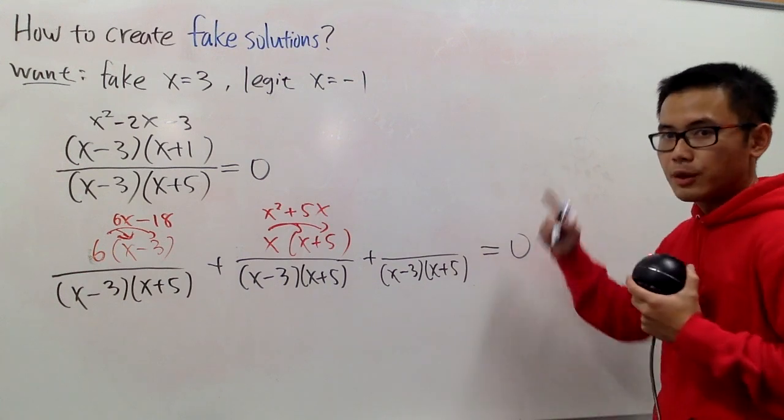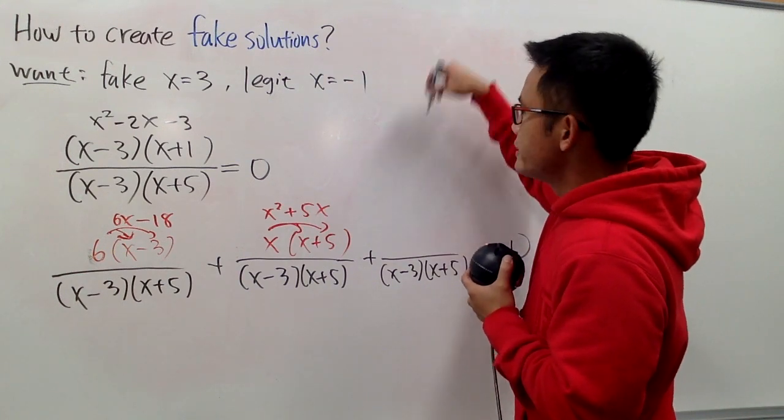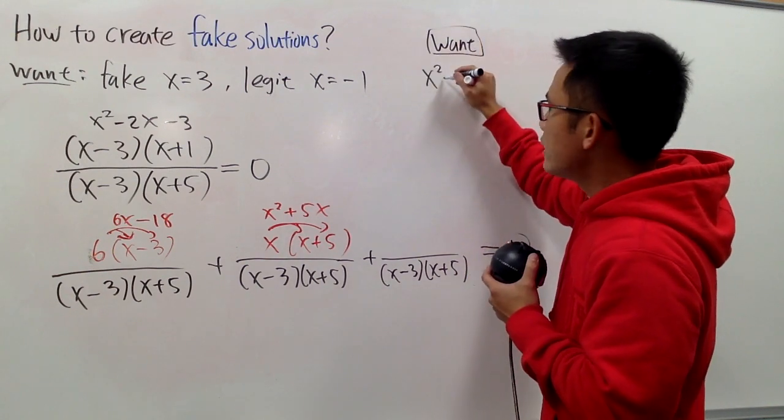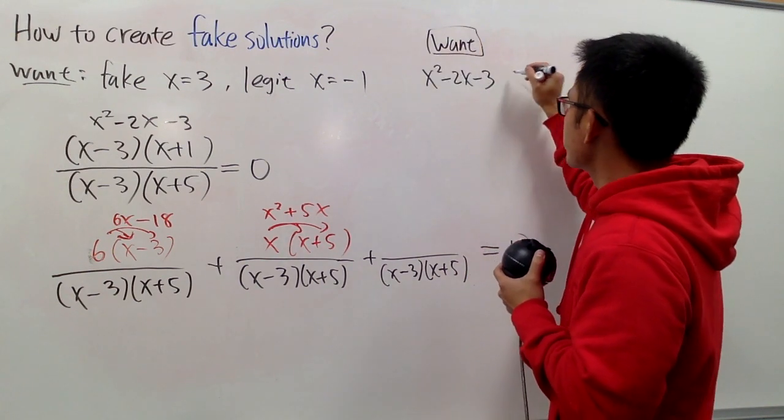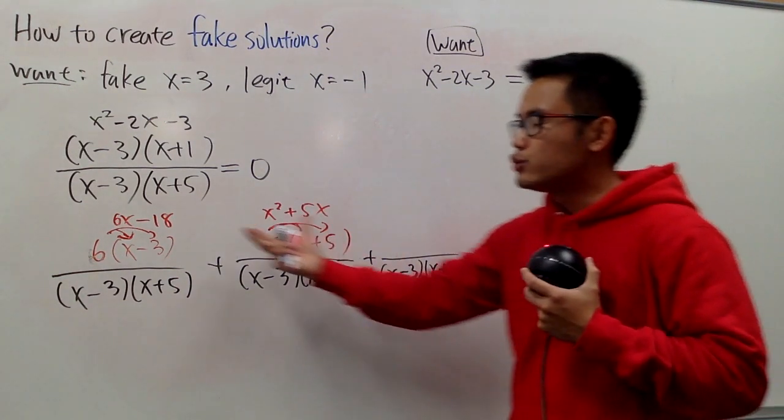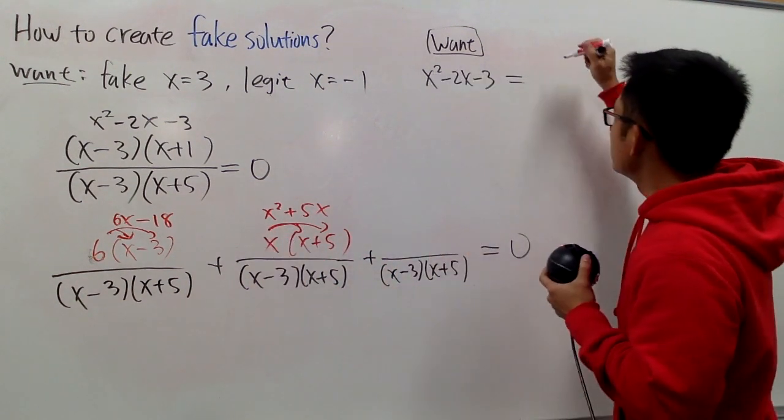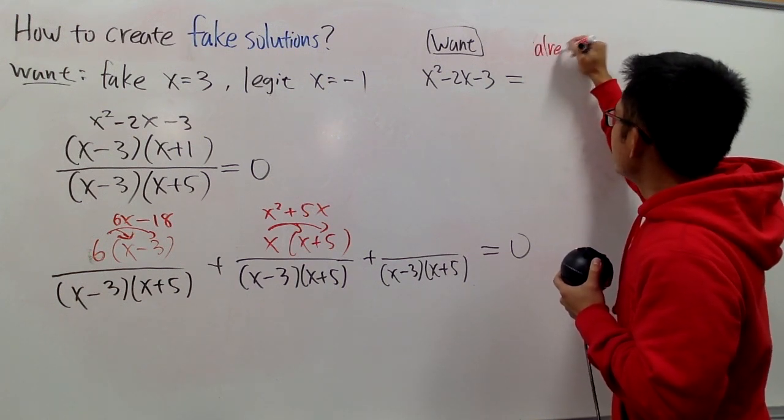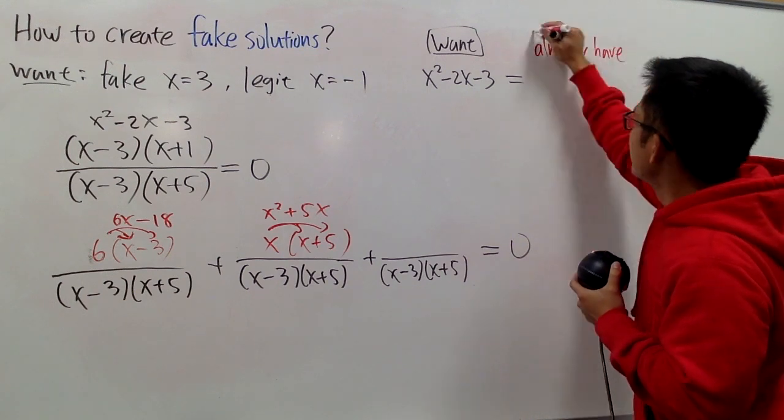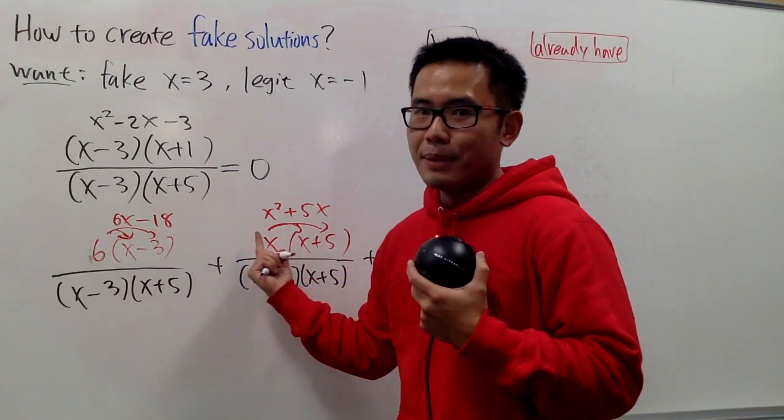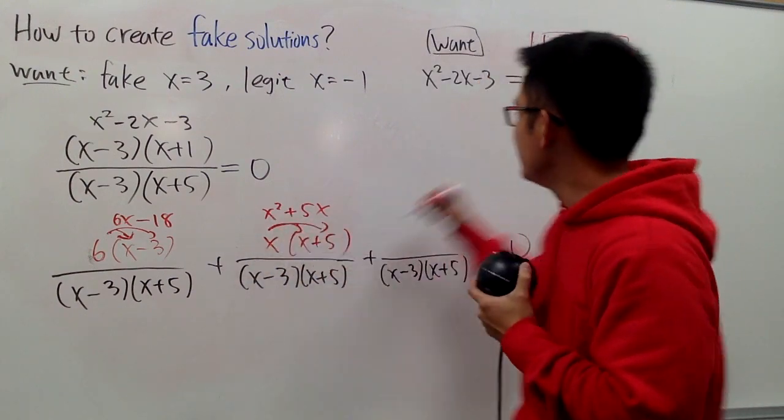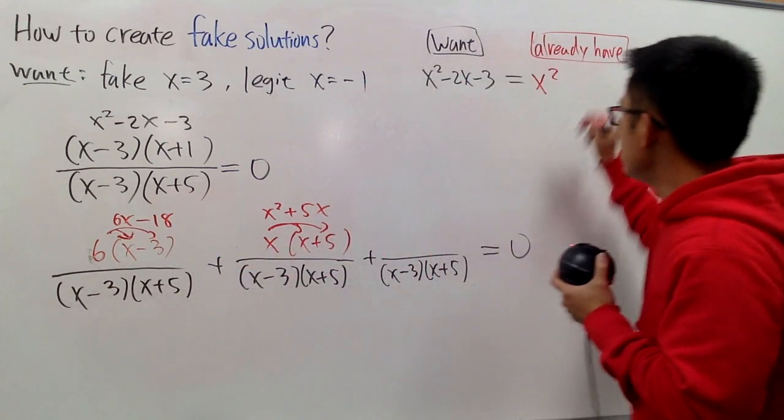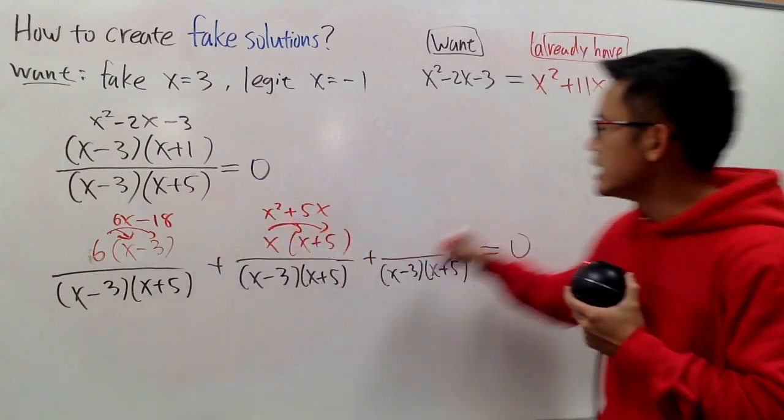So now, check this out. I will put this down right here. The things that you want is that, x squared minus 2x minus 3, and you want to set this equal to what you have already. Let me just say you already have. And of course, let's just combine the terms. We will have the x squared, and then 5x plus 6x, that's 11x, and then that's negative 18.